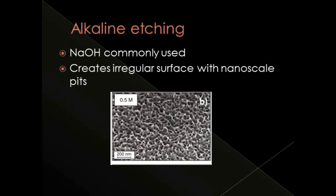In alkaline etching, the most common alkali used is caustic soda or sodium hydroxide. Etching the titanium implant in a boiling alkali solution creates a regular surface with nanoscale pits, which enhances the bone response.